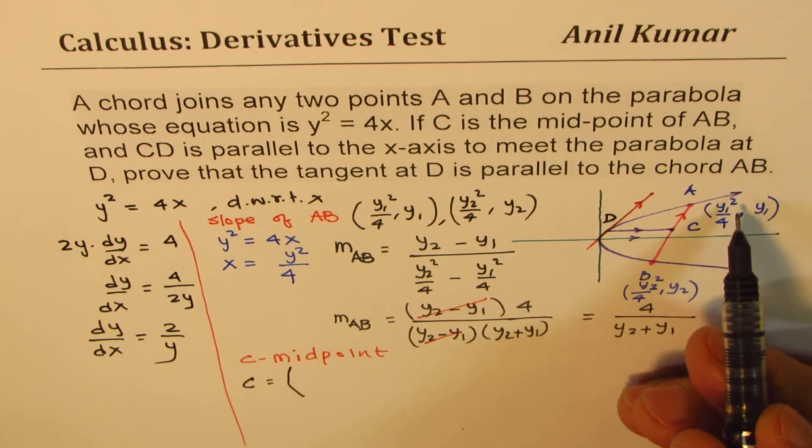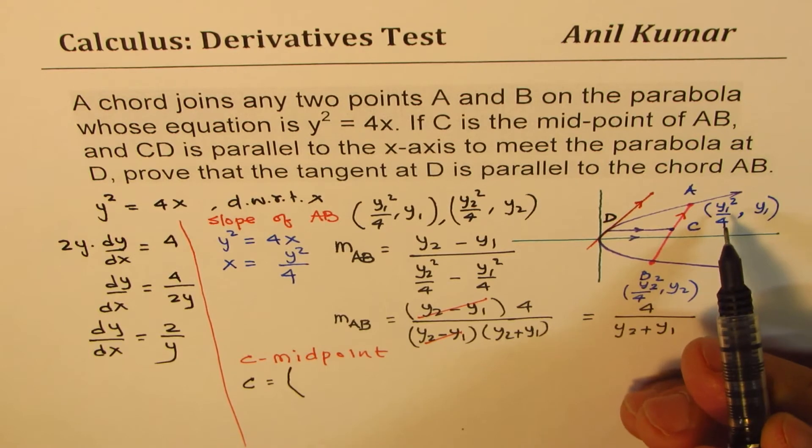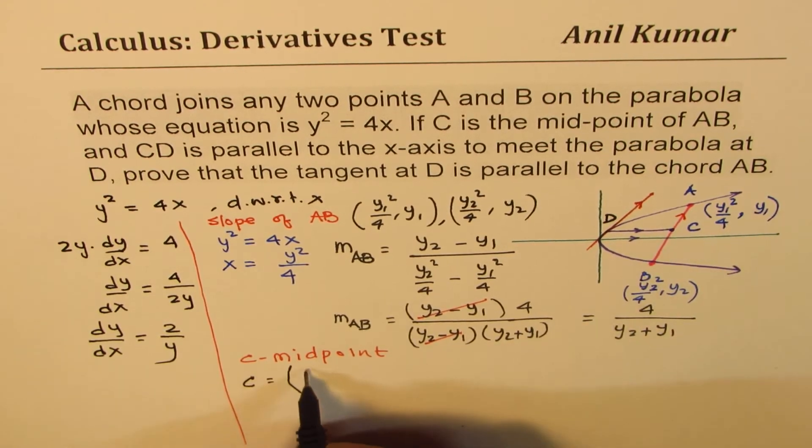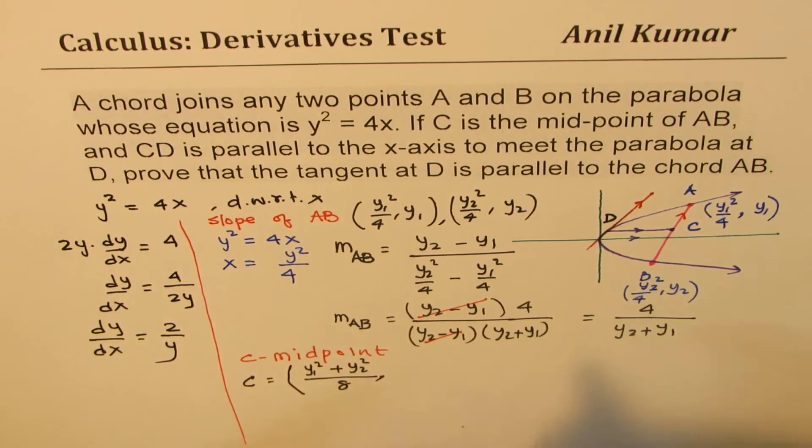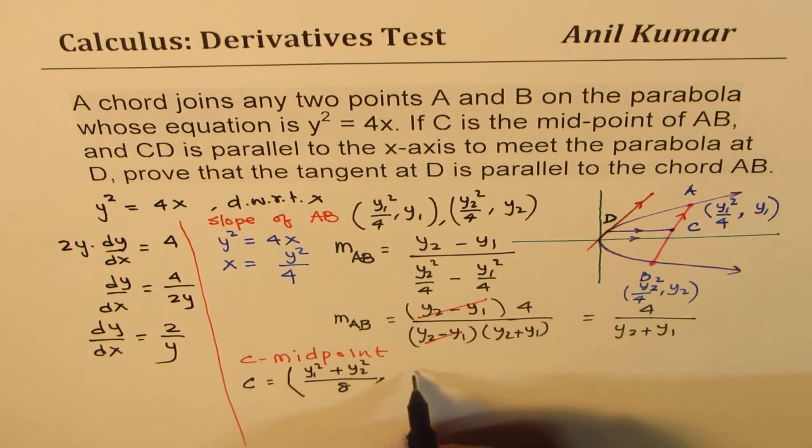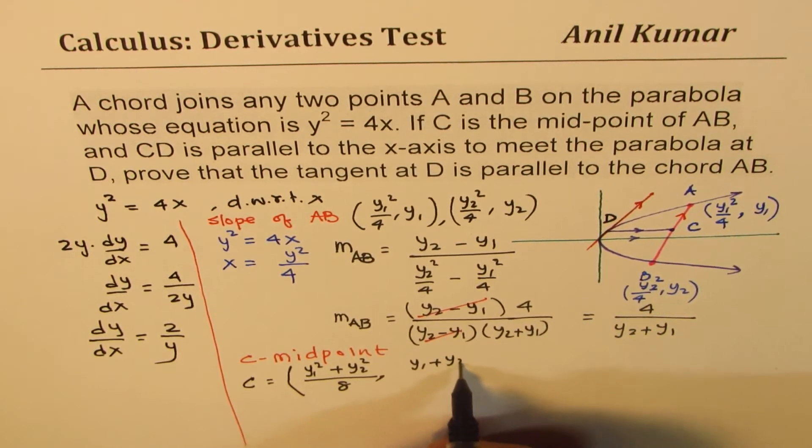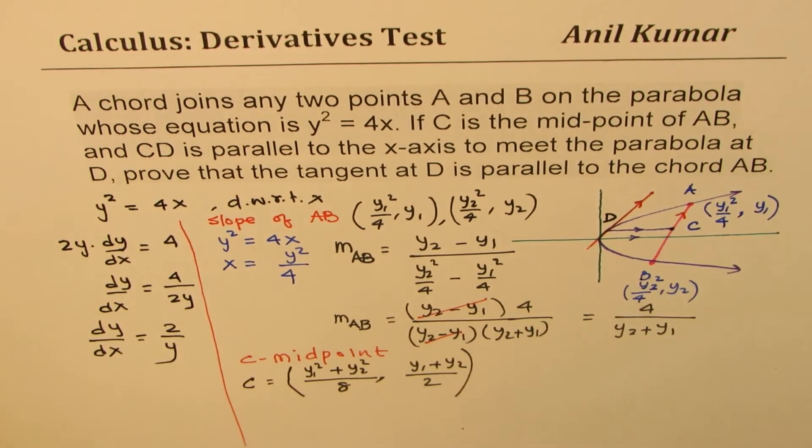That means the coordinates for C should be average of x values and y values. So A and B are y₁²/4 and y₂²/4, so we can add them and divide by 2. That gives us (y₁² + y₂²)/8. And the y values will be (y₁ + y₂)/2. So that becomes the coordinates of point C.